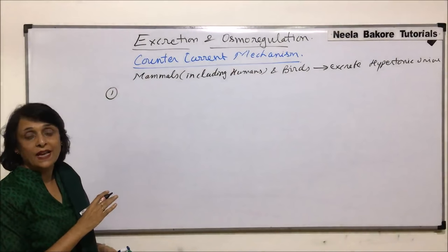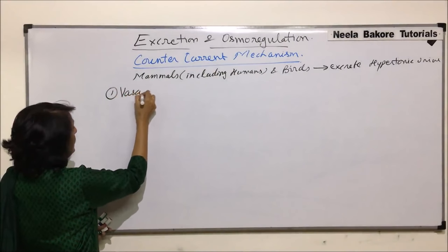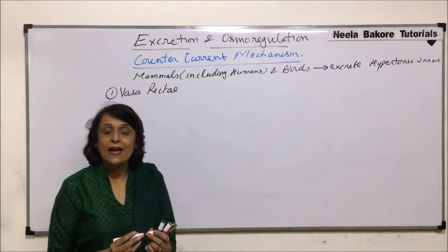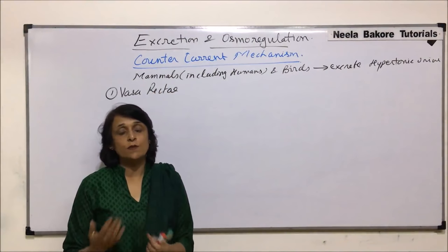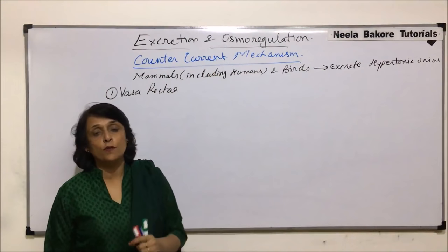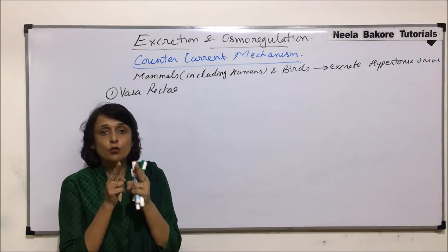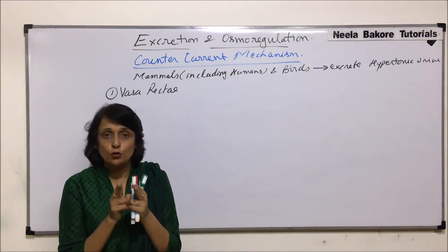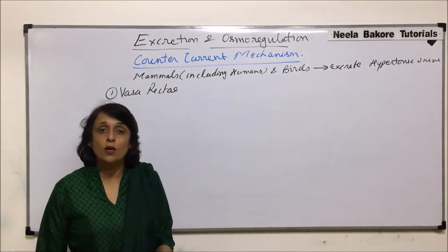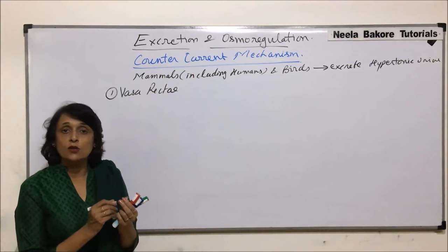The first place where this counter-current mechanism works is the vasa recta. Counter means something moving in the opposite direction, and current refers to the flow. When liquid flows in the two arms of a tube in opposite directions, that flow is called counter-current.